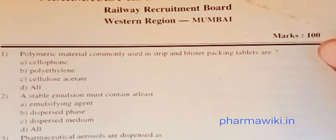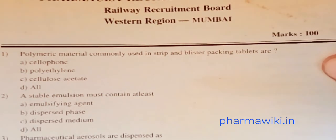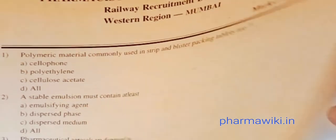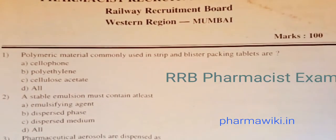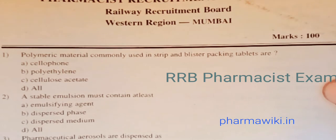Question 5: Pyrogen can be detected on glass surface by — UV spectra, NMR spectra, LAL test, or Chick test. The answer is C, the LAL test. Pyrogen can be detected on glass surfaces by the LAL test.